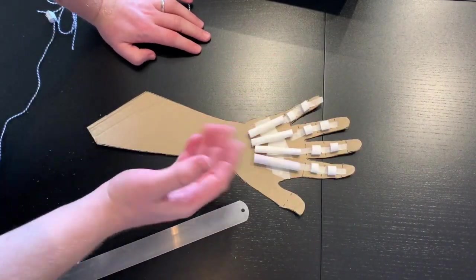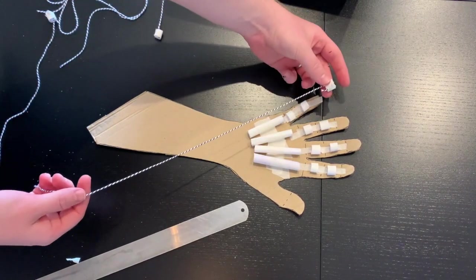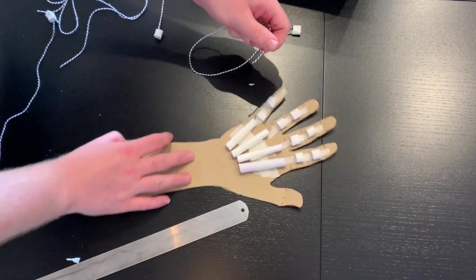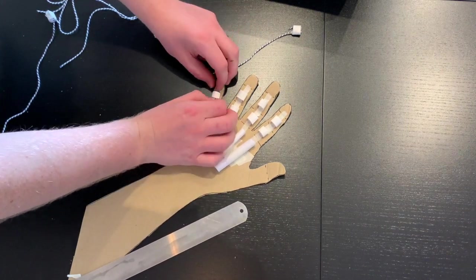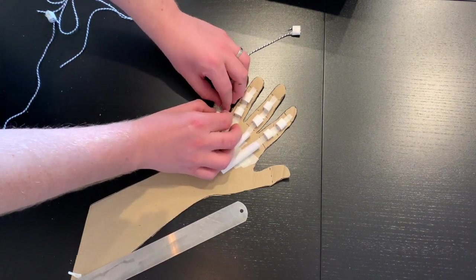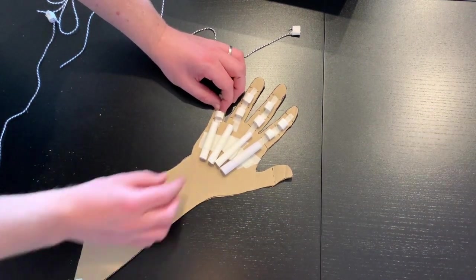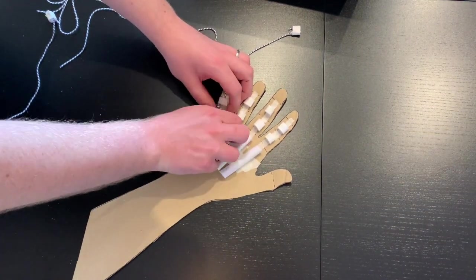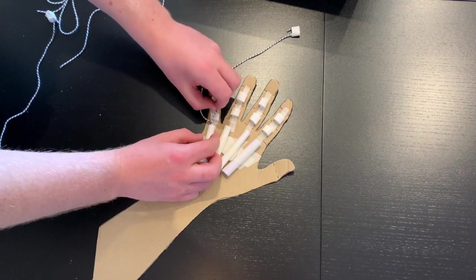Now we've got all our straws in place for the fingers. The last thing we have to do is put our string in place. It's a bit tricky, but we just have to feed our string through each of these sections. And remember, keep a nice tidy workspace. Makes things a lot easier. And then I've just got this last section to feed the string through now.